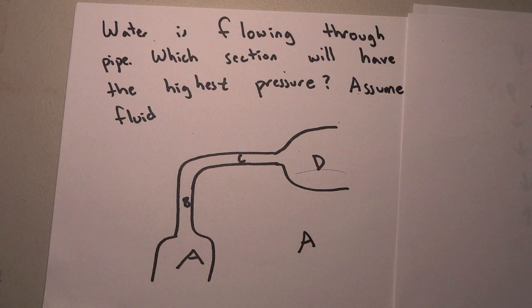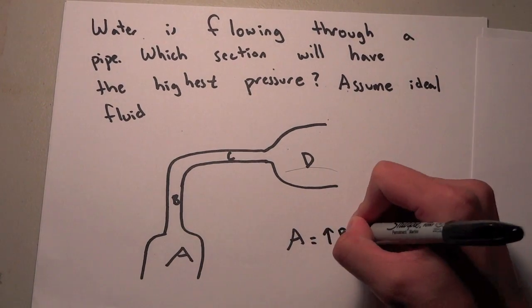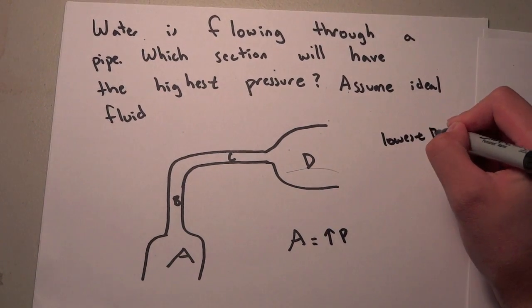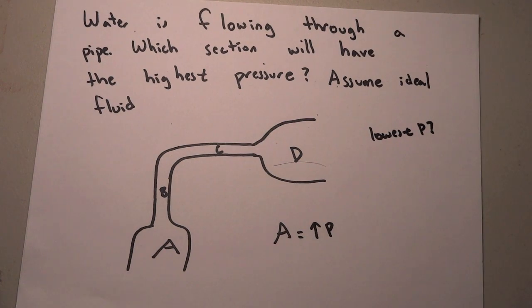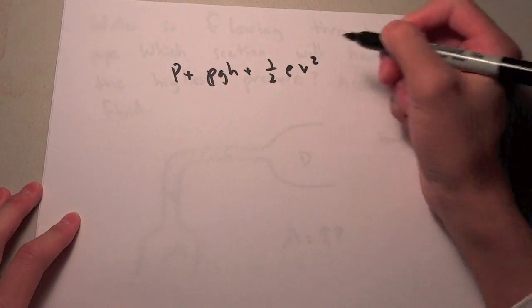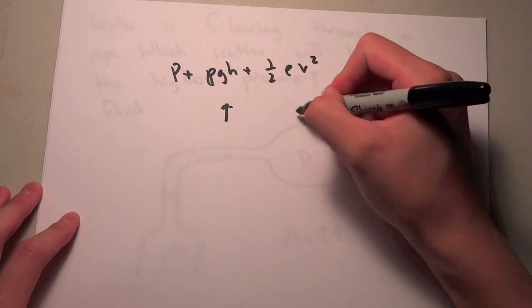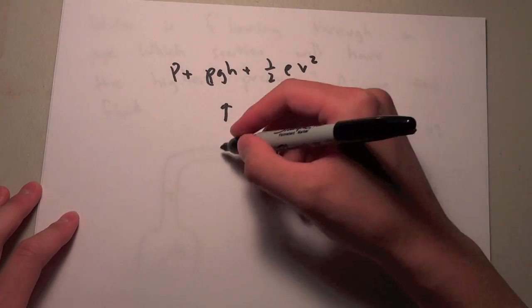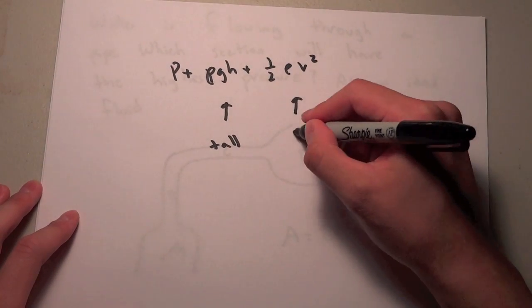So now let's see, what if we wanted to change this question and we want to find what has the lowest pressure. So A has the highest pressure. What has the lowest pressure? We're going to see that with that same equation, in order to decrease the pressure, we're going to have to increase everything here. So we're going to want something that is very tall, high off the ground, but also something that has a high velocity.